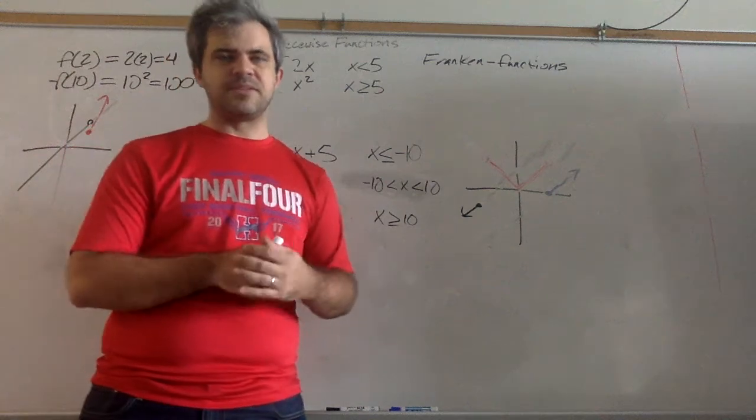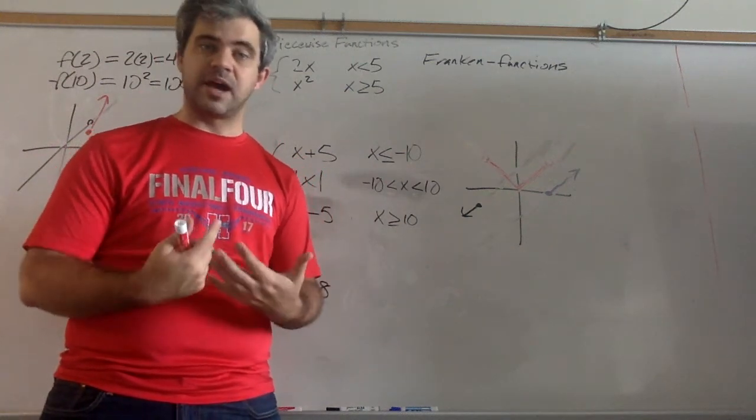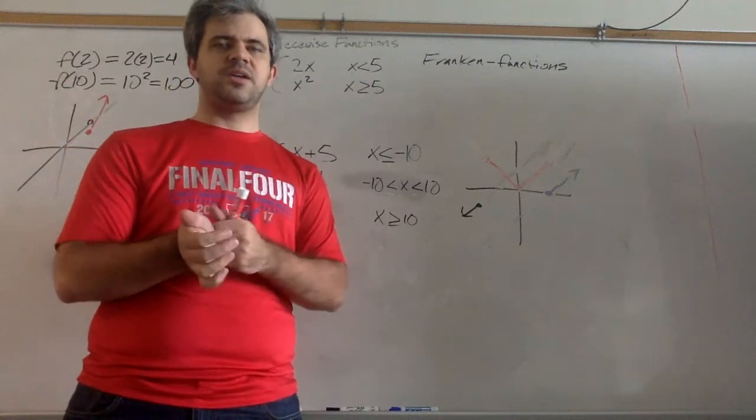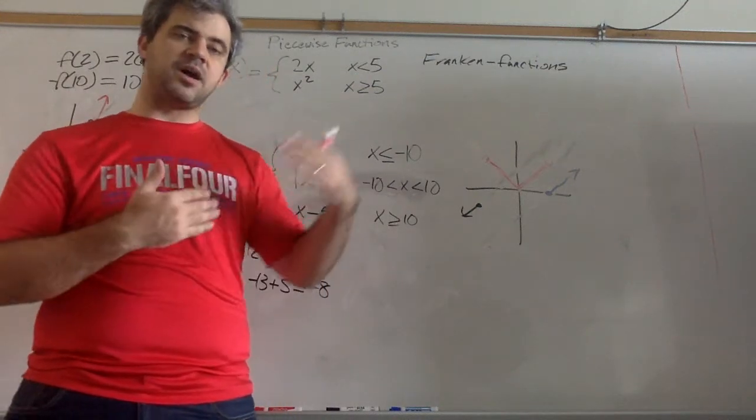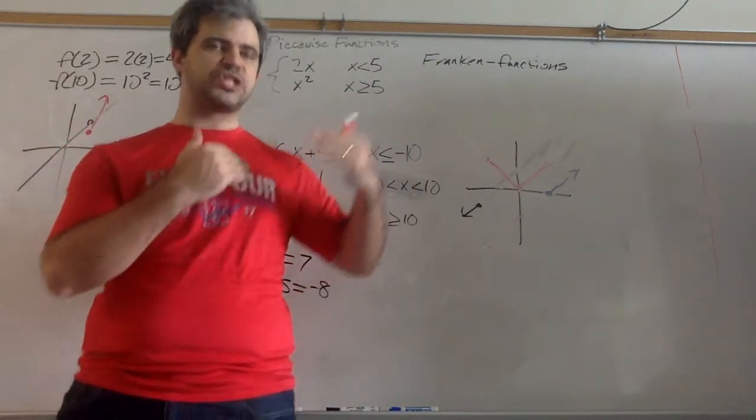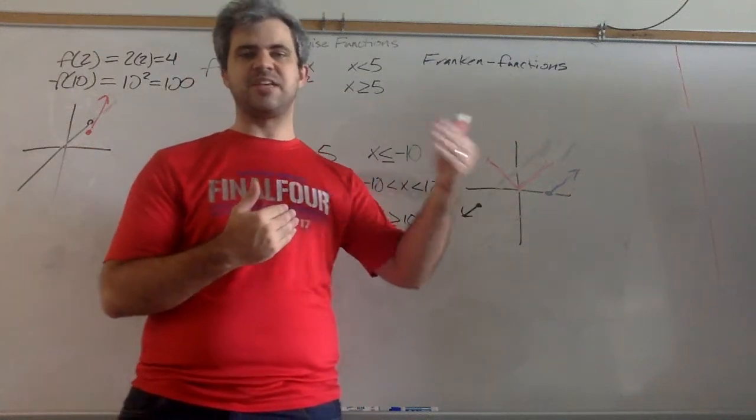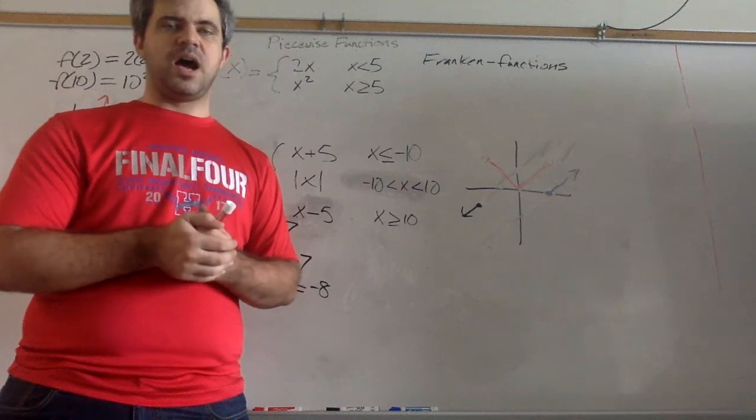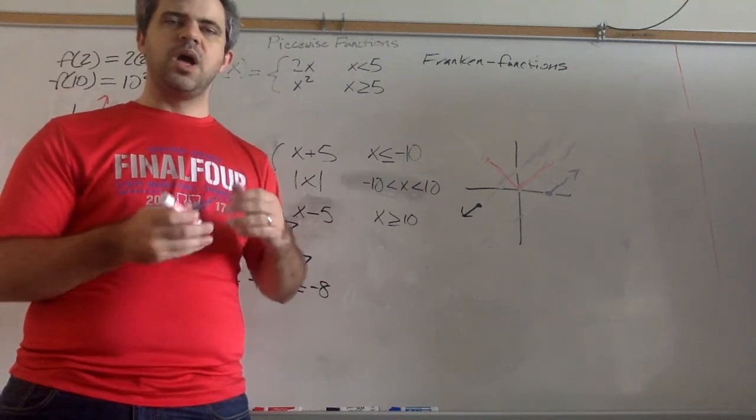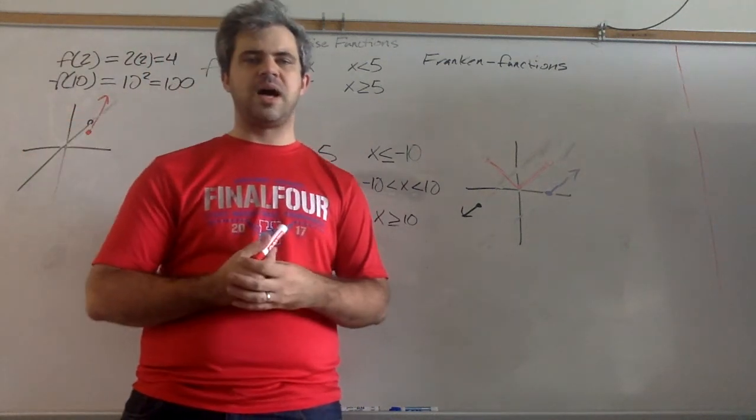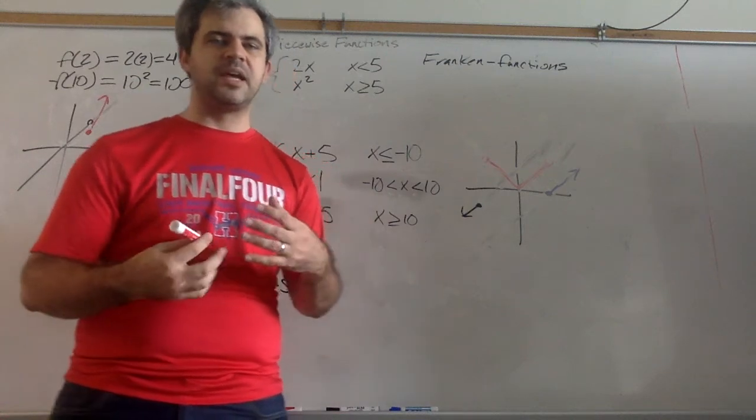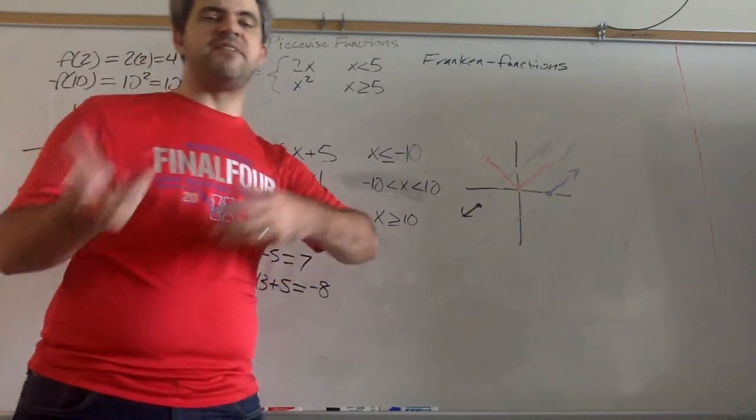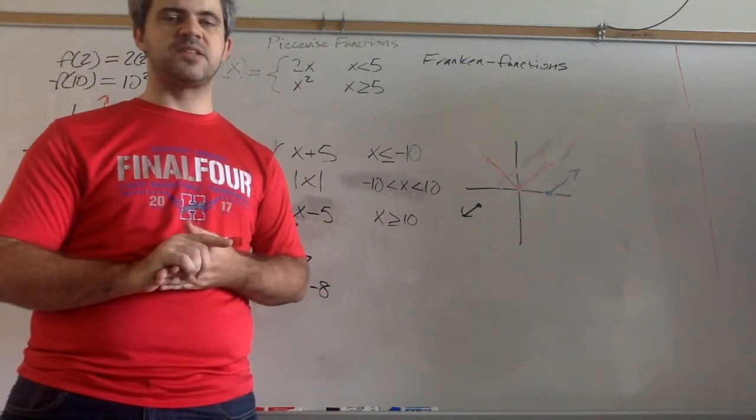And these show up in different places. For example, your income tax, how much tax you pay, the formula that you're paying depends on how much money you make. So the formula changes at a certain bracket. So these kinds of formulas will show up randomly in places, especially where we're inventing things where it's something that's not natural.